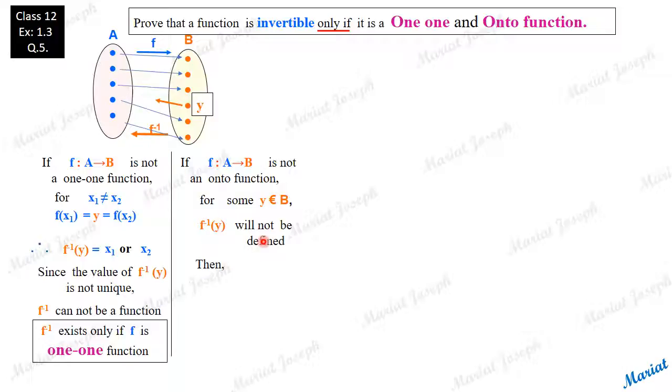f inverse will not be possible for a y of this kind. So f inverse cannot be a function since one element doesn't have an image. Every element should have unique image for this to be a function. So in case we assume this f to be not an onto function, then this f inverse rule will not be a function. So we have to conclude that f inverse will exist only if this f is onto function.